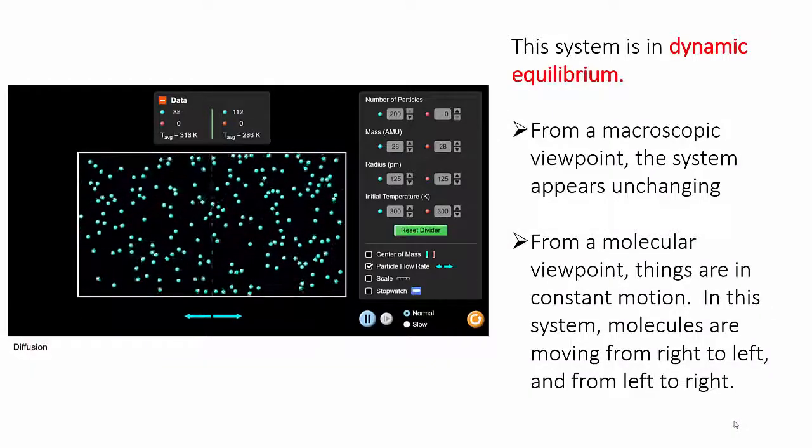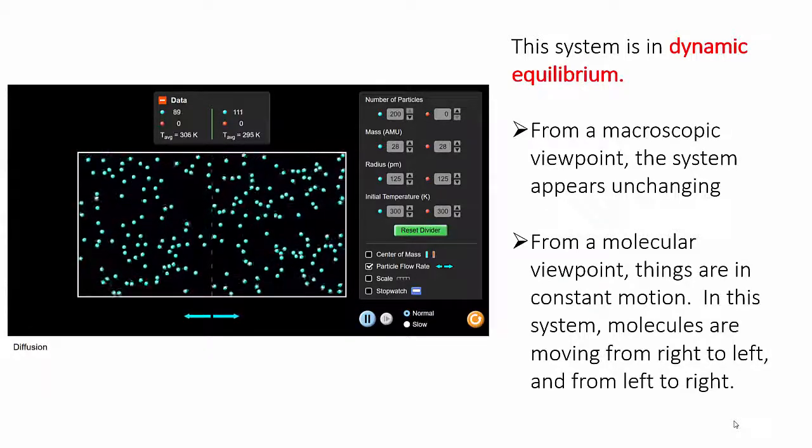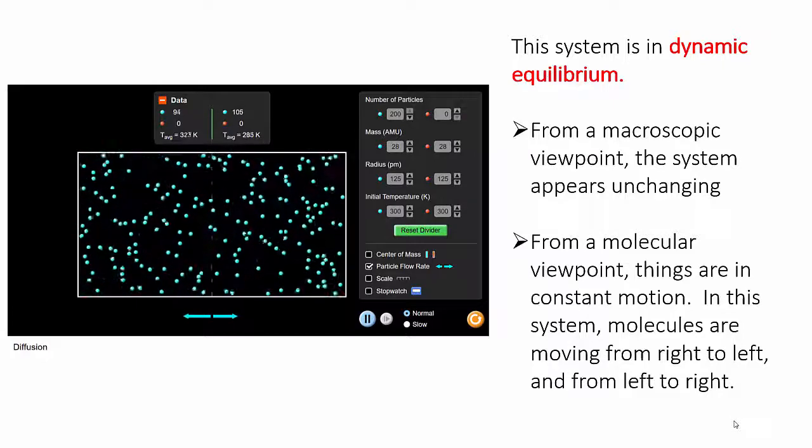At this point, when the left and right flow rates are equal, the system is said to be in equilibrium. Specifically for a chemist, it's in dynamic equilibrium.